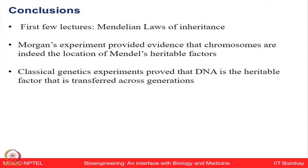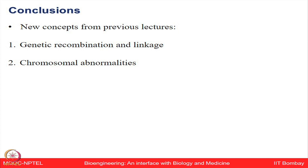This brings to the end of this entire section on genetics. You are now familiar with Mendelian laws based on Mendel's experiment on the classical pea plant. You now also know how Morgan independently tested Mendel's observations using another model system which was Drosophila melanogaster or the fruit fly, which provided evidence that chromosomes are indeed the location of Mendel's heritable factors. We have discussed the classical genetic experiments which proved that DNA is a heritable factor and is transferred across generations. You are also introduced to the concepts of genetic recombination and linkage between genes and how it affects inheritance of characters. We discussed a few chromosomal abnormalities and looked at various examples and syndromes - how alteration of chromosome numbers and even structure could cause genetic disorders.